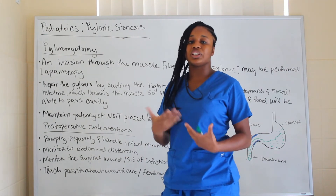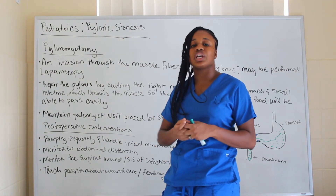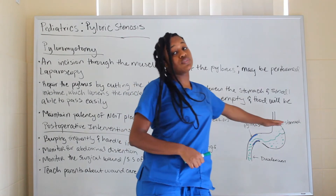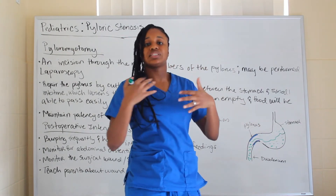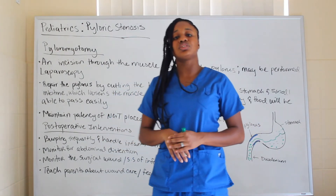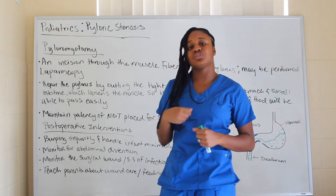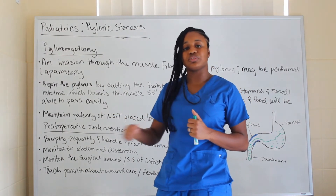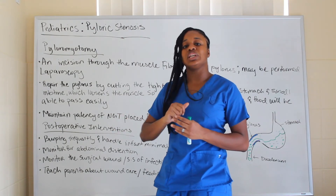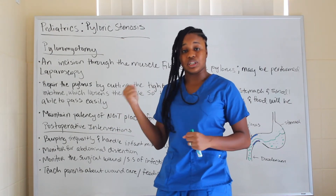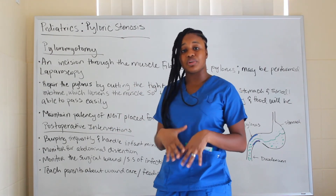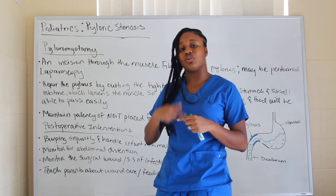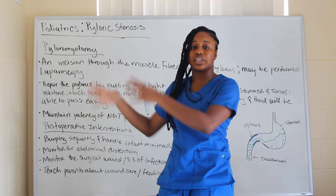Before surgery, you want to maintain a patent NG tube. This is mainly to decompress the stomach — since the stomach was full and causing projectile vomiting, the NG tube allows fluids, secretions, and built-up gas to drain into the canister, decompressing the stomach before the procedure.